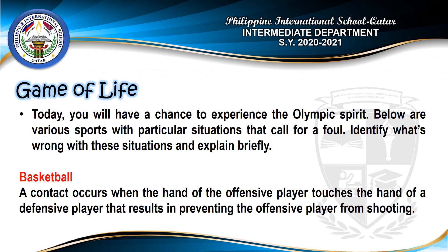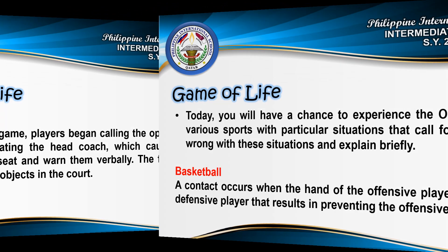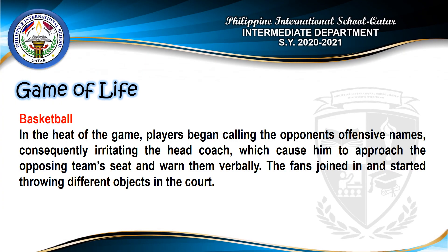Basketball: A contact occurs when the hand of the offensive player touches the hand of a defensive player, resulting in preventing the offensive player from shooting. In the heat of the game, players began calling the opponent's offensive names, consequently irritating the head coach, which caused him to approach the opposing team's seat and warn them verbally. The fans joined in and started throwing different objects in the court.